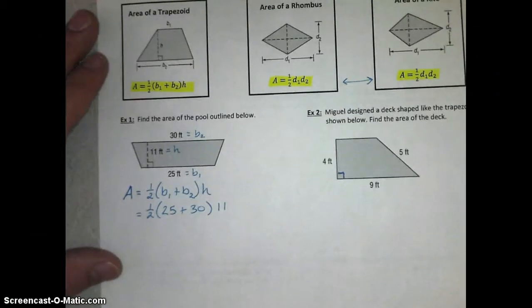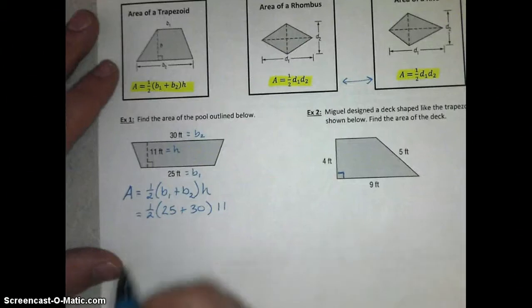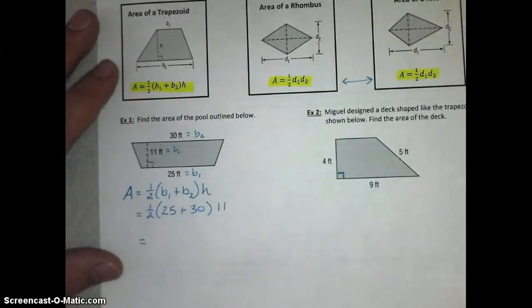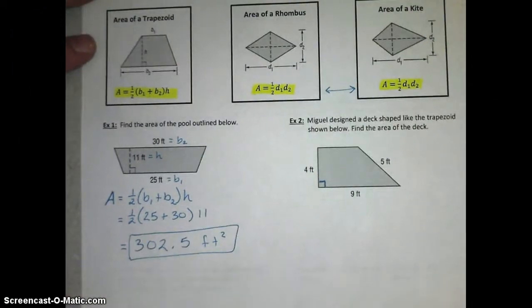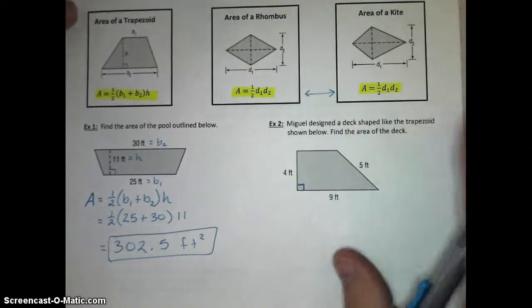I'll let you guys go ahead and try that in your calculator and see what we get. If you need any more time, just pause. Otherwise, this is the answer we should get for our area of this trapezoidal pool. 302.5 square feet. Let's move on to example 2.